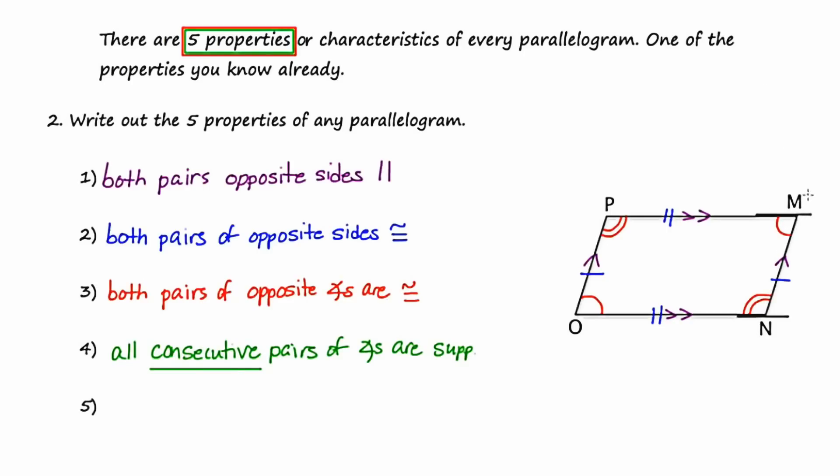And if we think of this line right here, these would be same side interior angles. And we know that if two lines are parallel, then the same side interior angles are supplementary. So that might make a little more sense why any two angles next to each other are going to be supplementary.